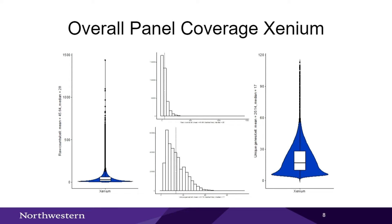For Xenium overall, we had good coverage, but remember it represents about a third of the total genes detected compared to CosMx. The Xenium had about 45 mean transcripts per cell but a median of 28, showing some skewness. For unique genes, it had a mean of about 20 and a median of about 17, with a little less skewness in terms of gene diversity.